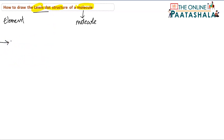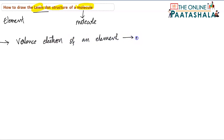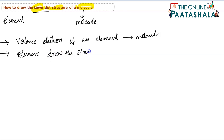First, we have to write down the valence electrons of each element which is present in the molecule. Next, we have to count how many elements are there and draw the structure. The main point is that each element in the molecule should be attaining octet configuration.